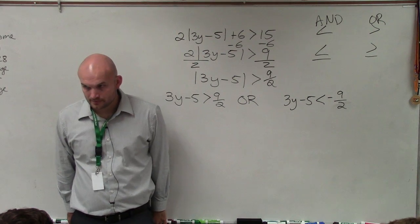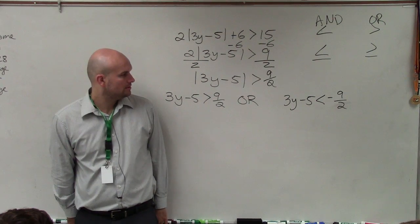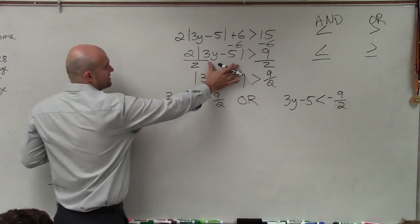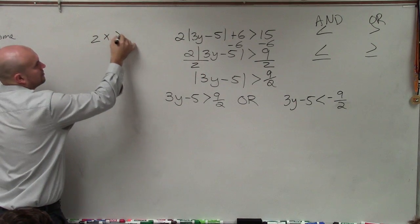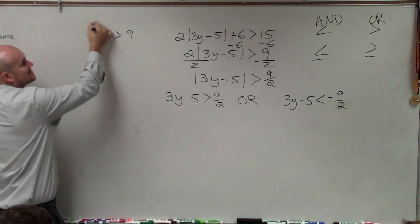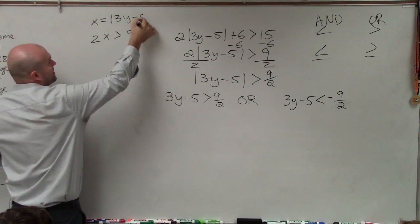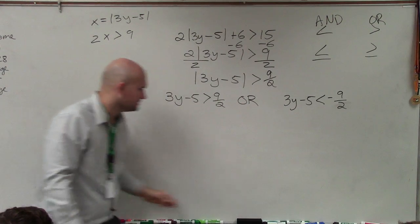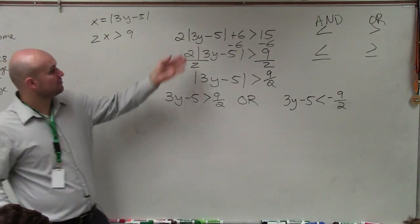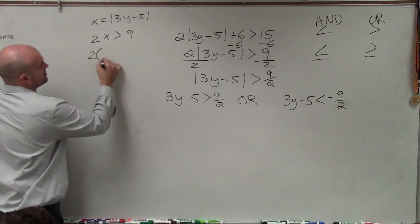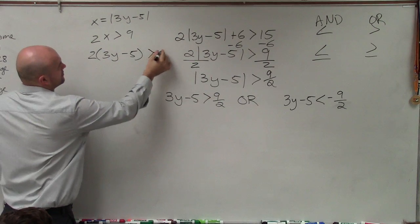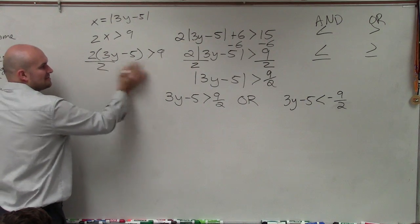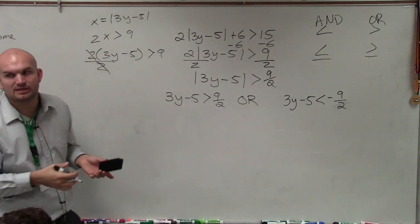Student asks: Why don't you apply a distributive property to 2 times 3y minus 5? Think of this as like a variable. It's like the same thing. x is equal to the absolute value of 3y minus 5. So we're not really doing anything. We're just looking at the absolute value sign. And anyways, even if this wasn't an absolute value, still, if I divide by 2, I'm multiplying 2 times all of this, and I'm dividing 2 times all of this, so they would divide out. So you wouldn't have to distribute it anyways.